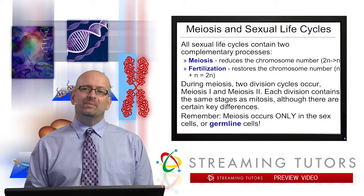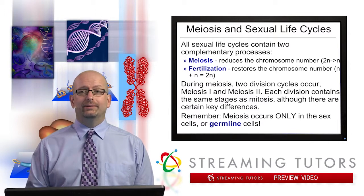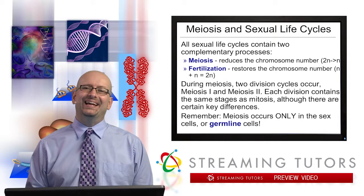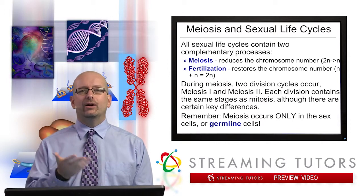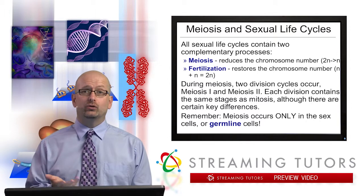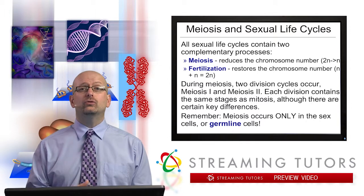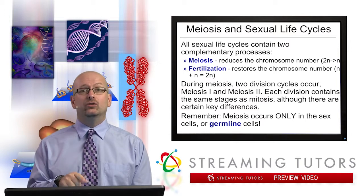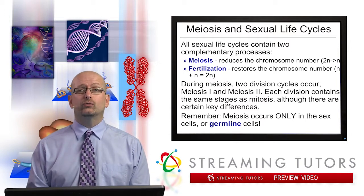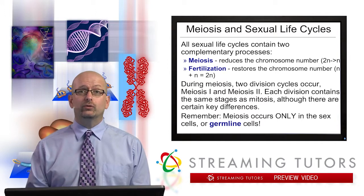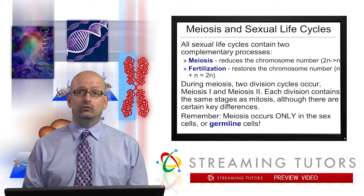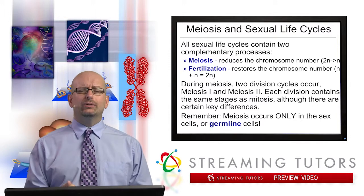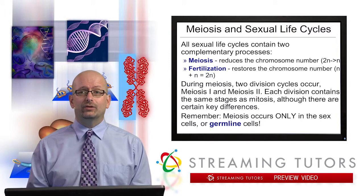If you've watched the mitosis video, we want to start off by highlighting the similarities and differences between mitosis and meiosis. You may recall that the whole job of mitosis is to make two identical daughter cells from one parent cell. We also said that the whole point of meiosis was to make cells that would become gametes or sexual cells. So meiosis is intrinsically linked with the sexual life cycle.